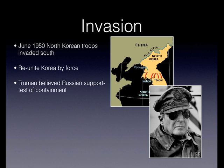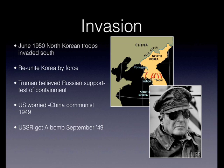Truman believed there was Russian support, as the US administration believed that anything undertaken by any communist government was centrally directed by Moscow. He believed this was a test of containment. The US was further worried as China had been united under the communists under Mao Zedong in 1949, and the USSR had got the atomic bomb in September of 1949. They were worried about communist world domination and the spread of communism. The North's invasion of the South seemed a dangerous spread of communism, endangering also America's capitalist outpost in East Asia — Japan.